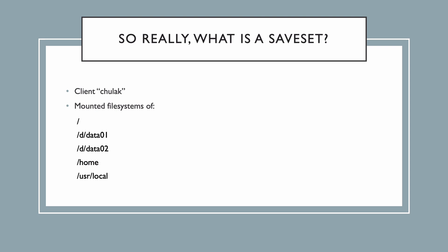When networker writes a save set, it stores a chunk of information about it, such as the originating client name, the name of the save set, when it was written, a unique identifier for the save set, a unique copy identifier for the save set, and so on. We'll cover some more of those details later when we get to networker databases.